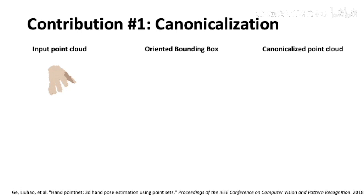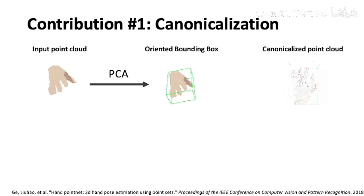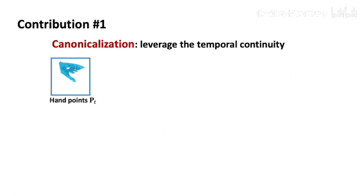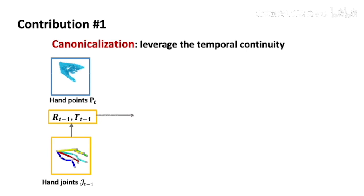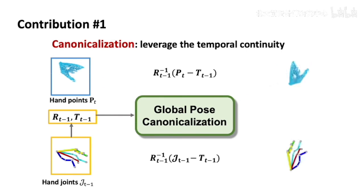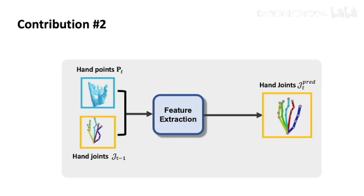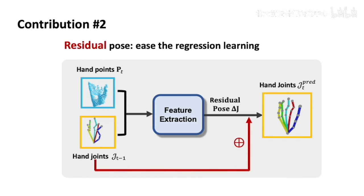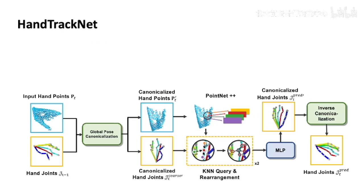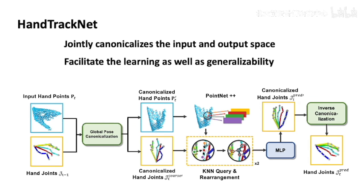The first contribution of HandTrackNet is to improve the canonicalization technique. To reduce the visual complexity of the input point cloud, previous works first use PCA to compute an oriented bounding box and then use it to canonicalize the hand so that its global pose becomes canonical. However, this technique fails in hand-object interaction scenarios due to heavy occlusions. We propose to leverage temporal continuity to canonicalize the input point clouds: given hand-joint positions from the last frame, we fit its global pose and use this to canonicalize the input. We further propose to regress only inter-frame residual motions of the hand-joints, which significantly eases the regression learning. Altogether, HandTrackNet jointly canonicalizes the input and output spaces, greatly facilitating network learning and improving generalizability.